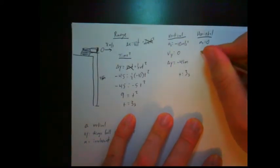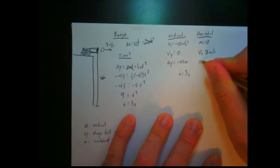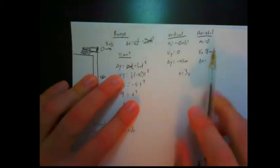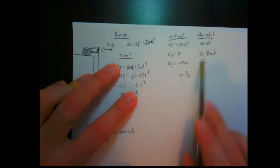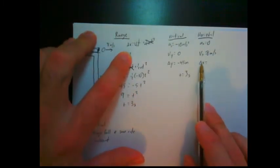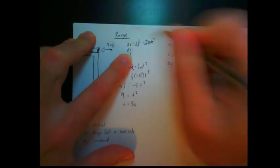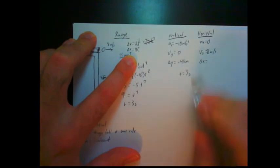What about horizontal velocity? Well, the initial horizontal velocity was 8 meters per second. And what we're trying to find is delta x. So let's take from our horizontal and plug in to our range formula. Delta x equals the horizontal velocity, which is 8, times the time, which was 3. So delta x will be 24 meters.